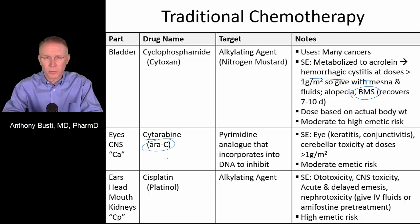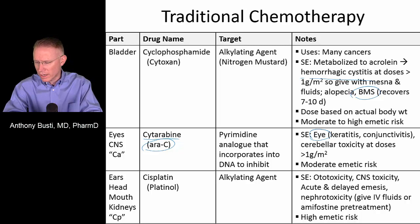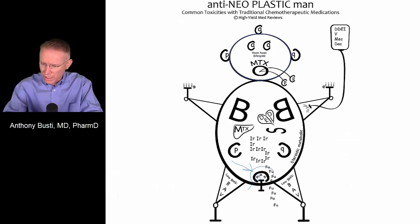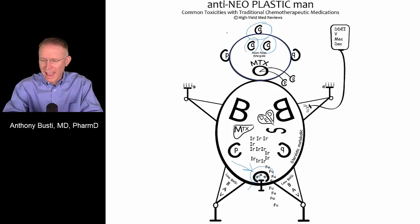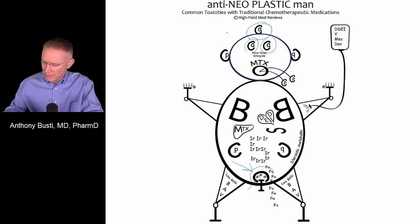Cytarabine is ARA-C, another pyrimidine that incorporates itself into DNA and inhibits DNA replication. It is known to cause ocular toxicity — specifically keratoconjunctivitis — as well as CNS toxicity involving the cerebellum. On antineoplastic man, the ARA-C is shown at the eyes to reflect the conjunctivitis and keratitis. The letters up on his head, almost like hair, suggest something going on in the brain — the central nervous system — and specifically the cerebellar toxicity with this medication.